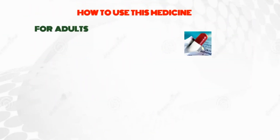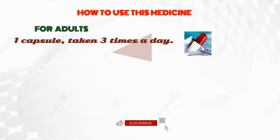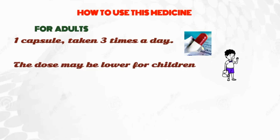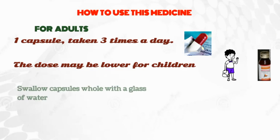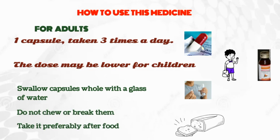The usual dose of amoxicillin 500 mg is one capsule taken three times a day. The dose may be lower for children, where amoxicillin comes in syrup form. Swallow capsules whole with a glass of water — do not chew or break them. Take it preferably after food to avoid stomach disturbances.